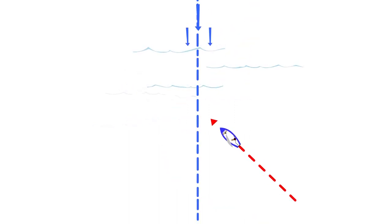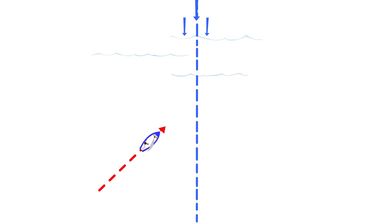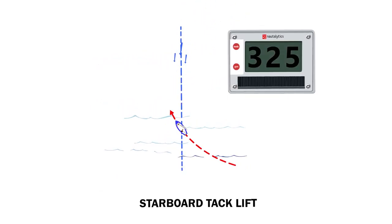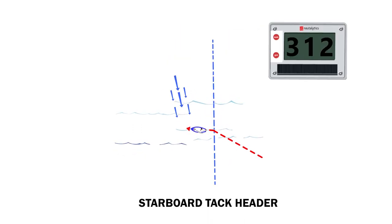A lift steers you closer to the mark. A header steers you away from the mark. On starboard tack, a higher compass heading is a lift and a lower compass heading is a header.